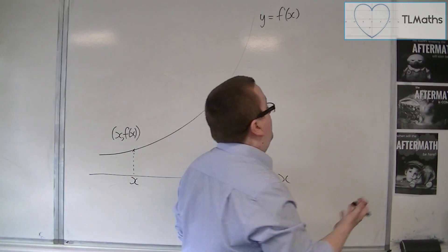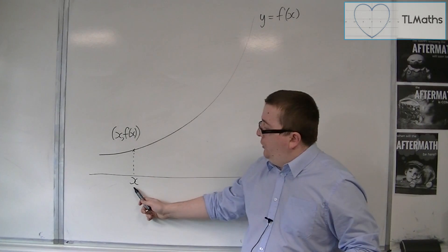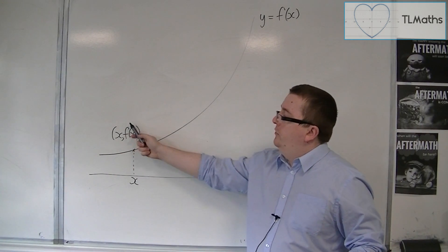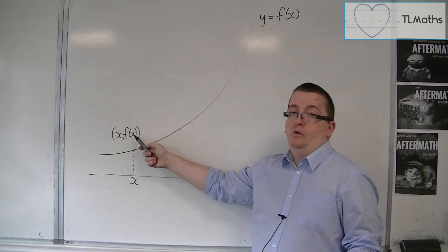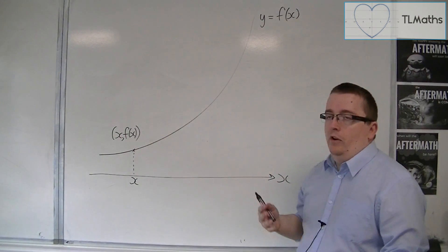So if f of x was x squared, for example, and this point was 2, this would be 2, 2 squared, so 2, 4. So that is a generic point on the curve.